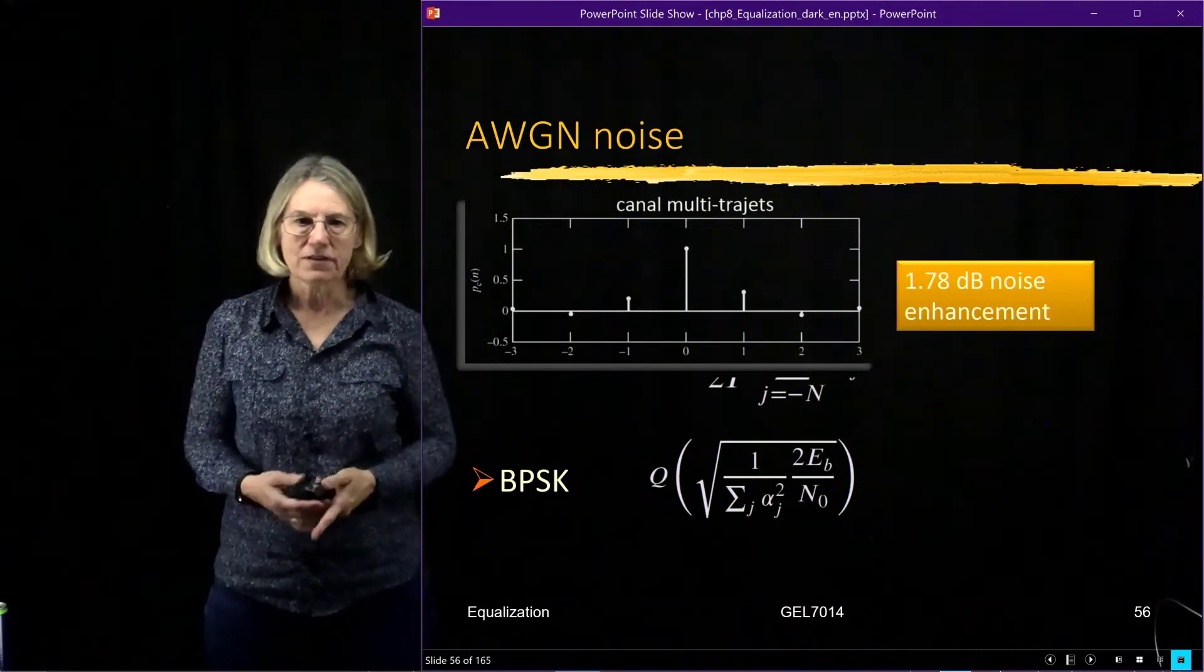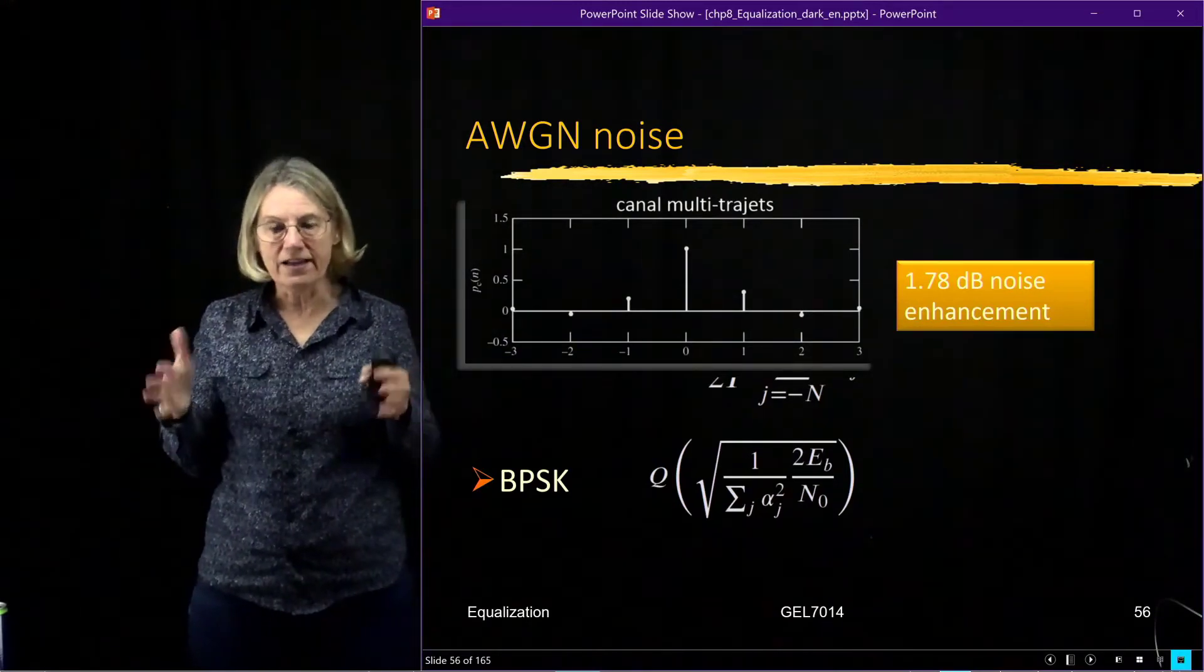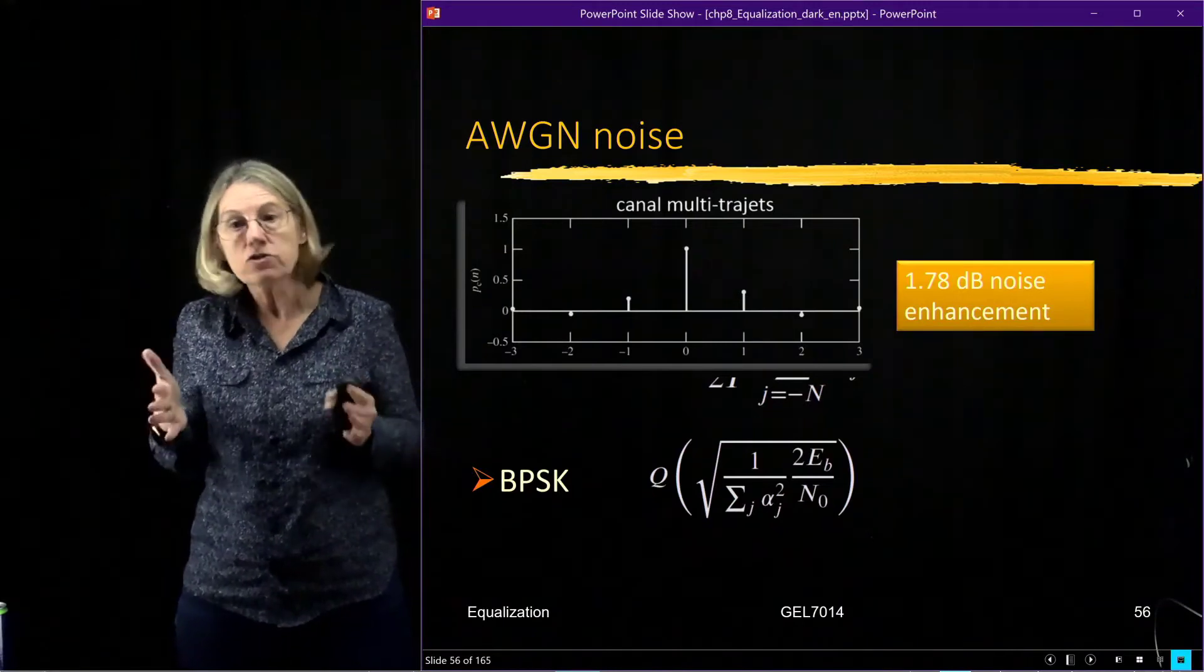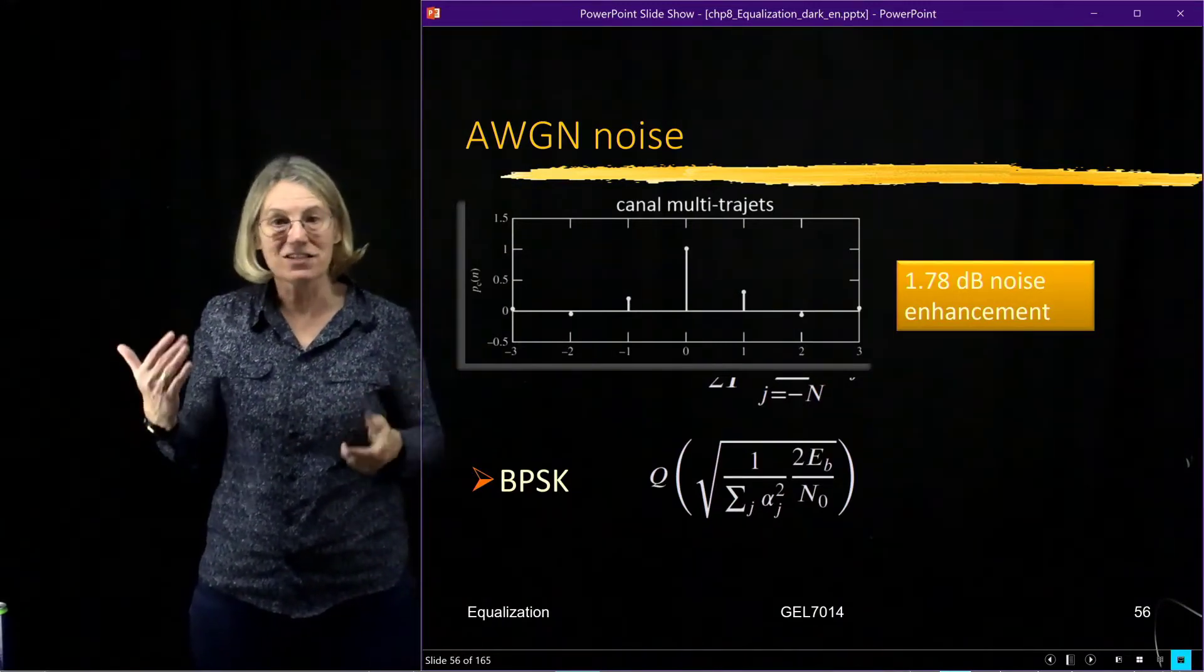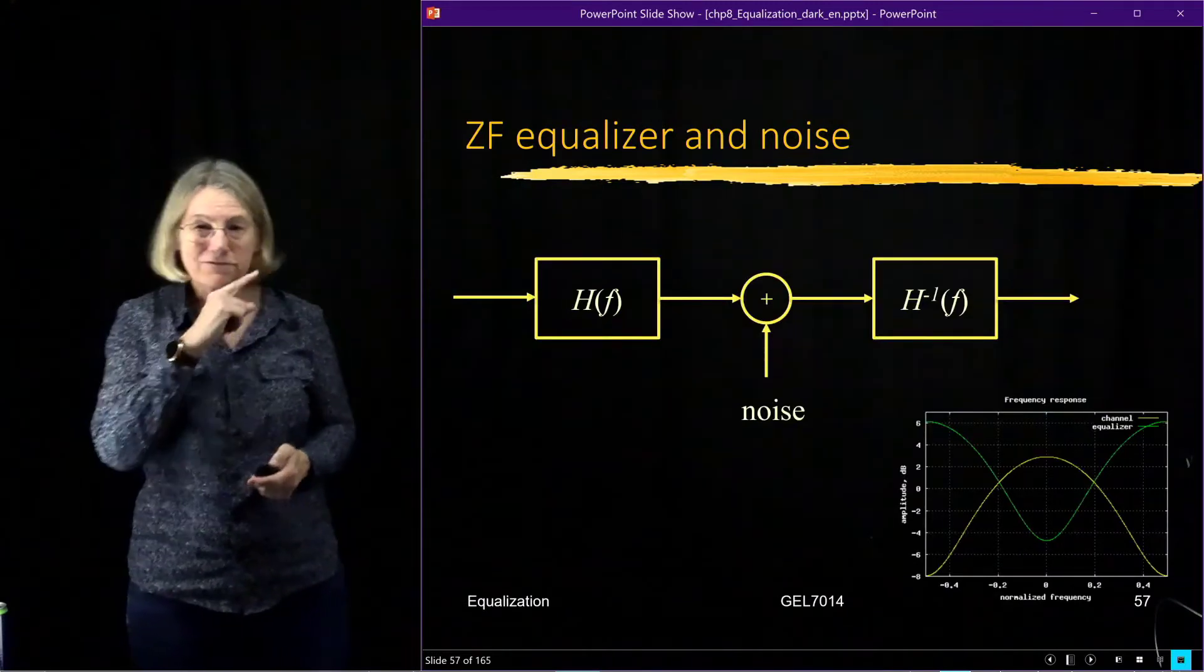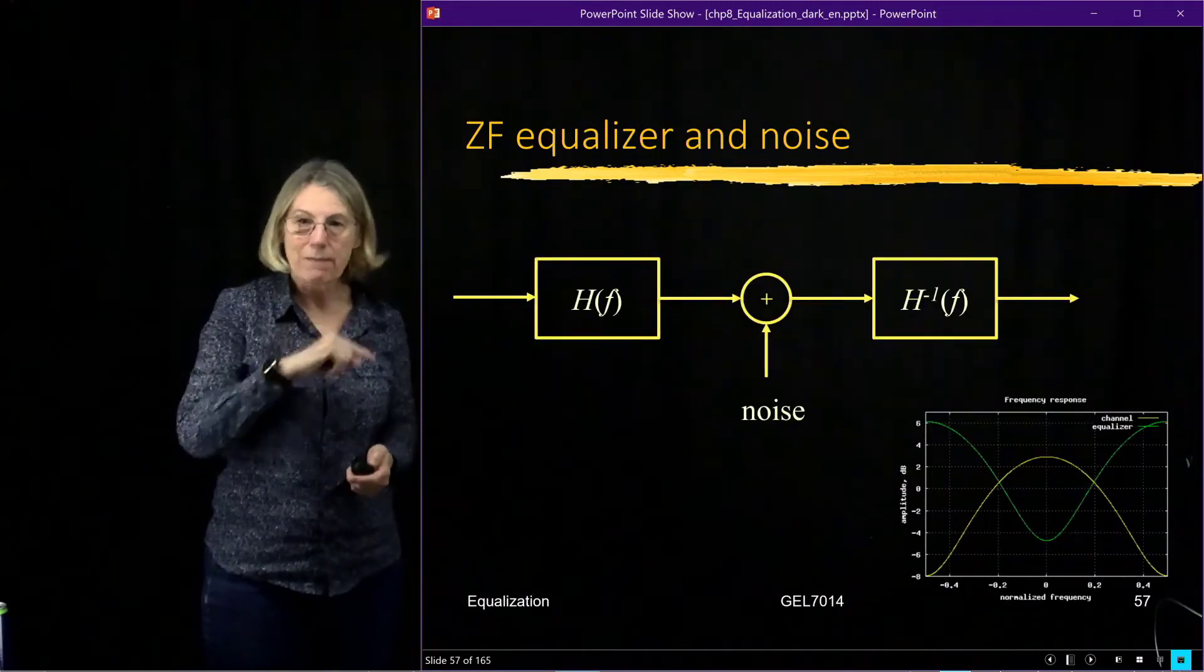So I have managed to zero out ISI where it used to be the worst and the closest in, but in doing that I have enhanced the noise. Remember if I look at the frequency domain I can see how I'm enhancing the noise.